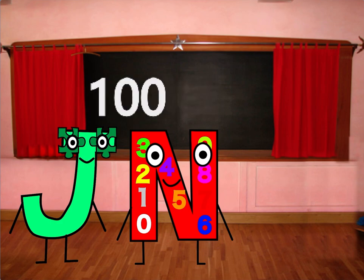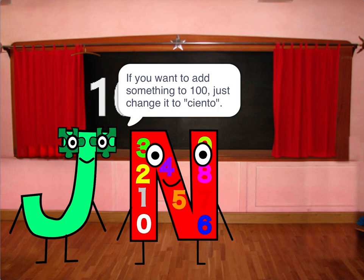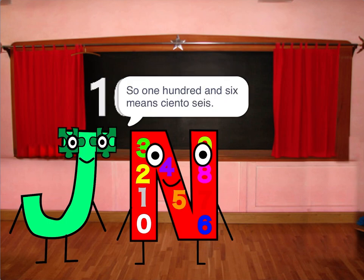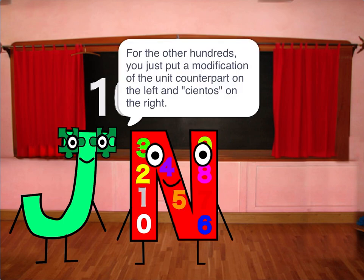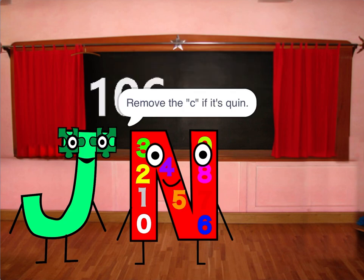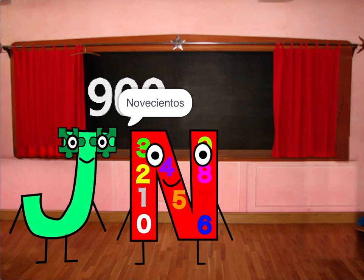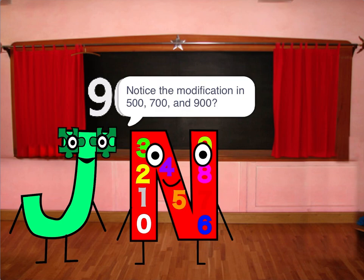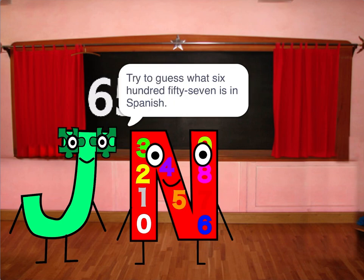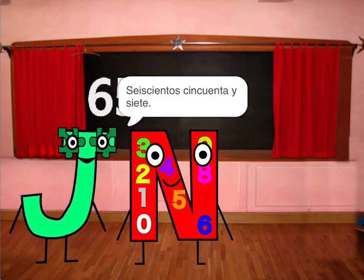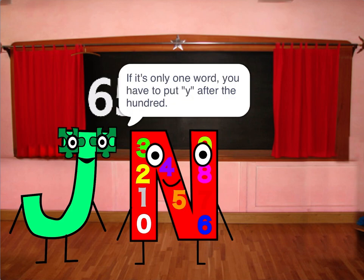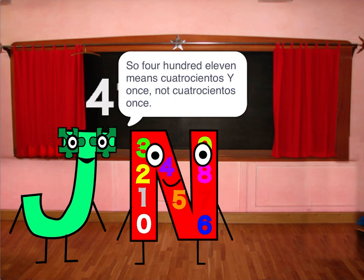Cien means 100. If you want to add digits after 100, just change it to ciento. So 106 is ciento seis with a y in between. For the other hundreds, you use a modification of the unit counterpart on the left and -cientos on the right: cien, doscientos, trescientos, cuatrocientos, quinientos, seiscientos, setecientos, ochocientos, novecientos. Notice the modification in 500, 700, and 900. Try to guess what 657 is in Spanish — seiscientos cincuenta y seis. If it's only one word, you have to put a y after the hundreds. So 111 is ciento once, not ciento unce.